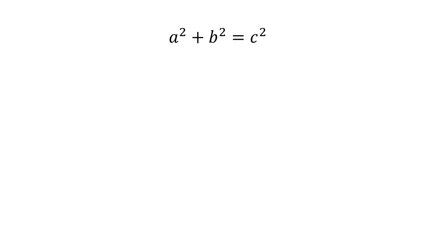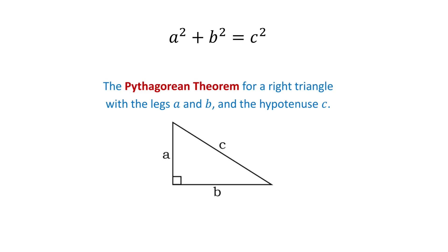The next formula is a squared plus b squared equals c squared. This is the Pythagorean theorem used on a right triangle with the legs a and b and the hypotenuse c.